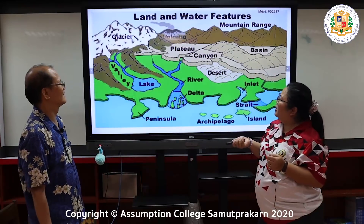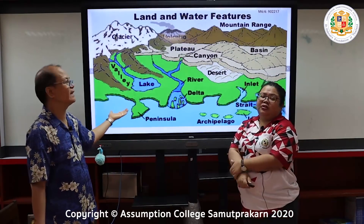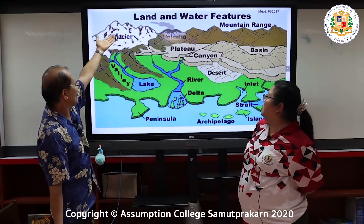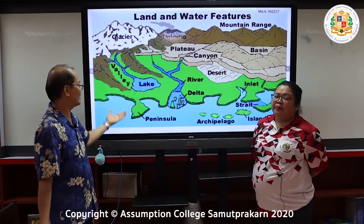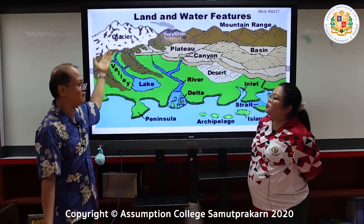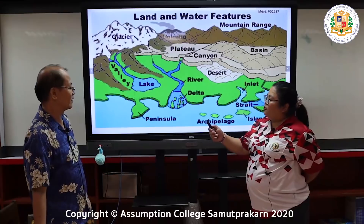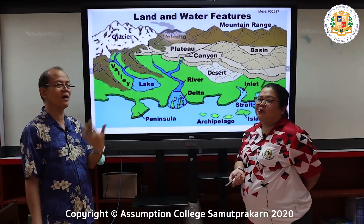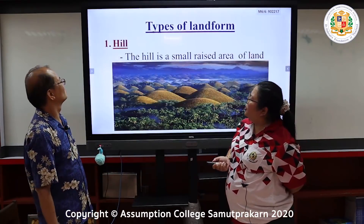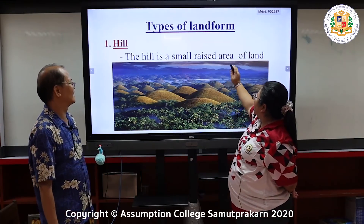These are the maps where we can see different types of landforms. As you can see, from the glacier down here to the peninsula, these are all the different types of landforms, and we will go through them one by one in the next slides.